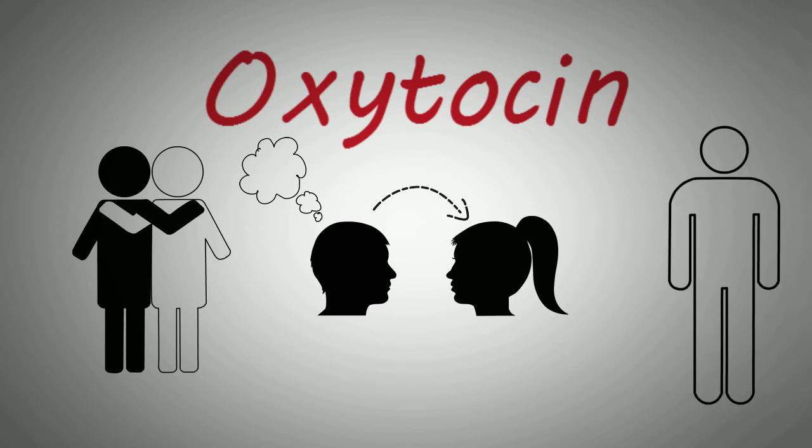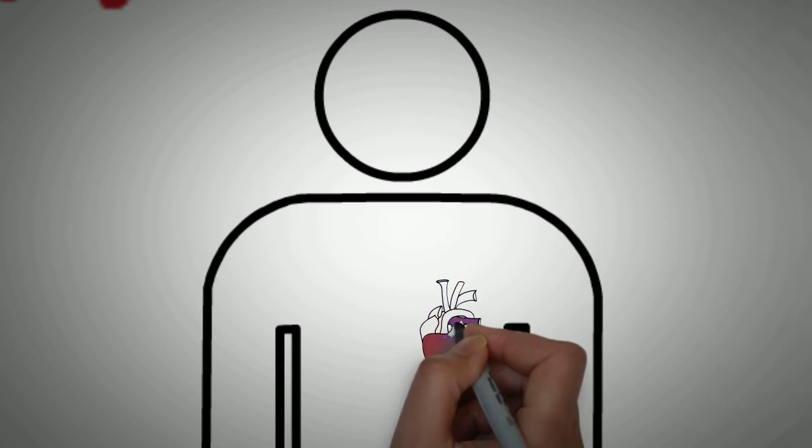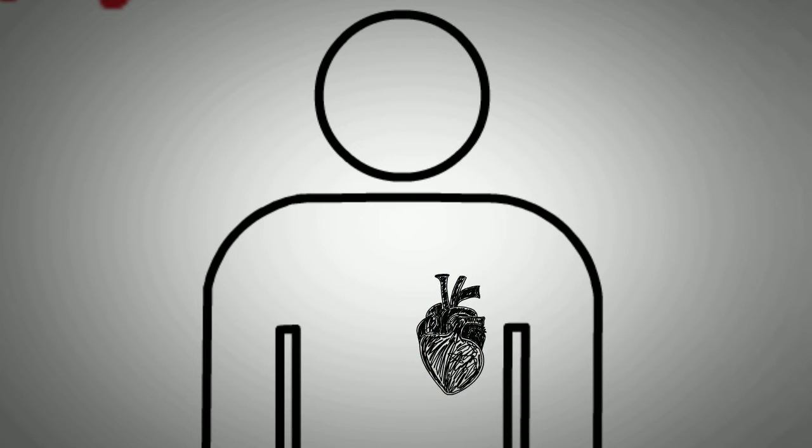When the hormone oxytocin is released into our body, it actually strengthens our heart and widens our blood vessels. This allows more blood to flow to vital organs like our brain.